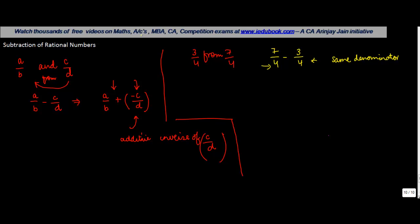What you do is, you take the denominator as common, just like you used to do in case of addition. And then, you subtract, take the difference of the two numerators, 7 minus 3. So 7 minus 3 gives you 4 divided by 4, which we know is equal to 1.